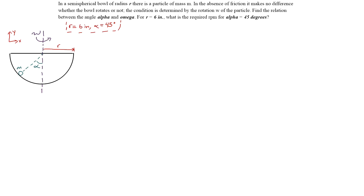In this dynamics problem, it states that in a semi-spherical bowl of radius r, there is a particle of mass m. In the absence of friction, it makes no difference whether the bowl rotates or not. The condition is determined by the rotation omega of the particle. Find the relation between the angle alpha and omega for r equals 6 inches.